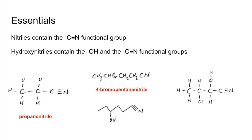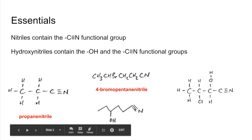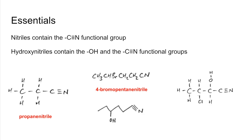The third structure is a hydroxynitrile. Counting the carbons: one, two, three, four, five, six. The hydroxy group is on carbon one, two, three, four — so this one is called 4-hydroxyhexanenitrile.